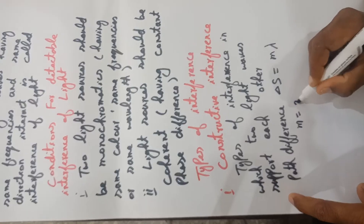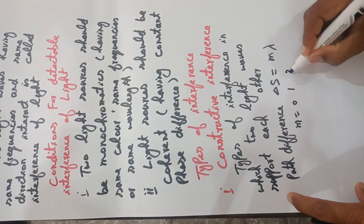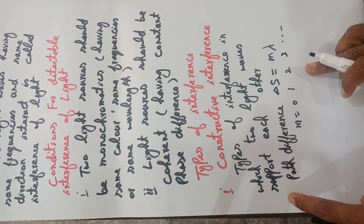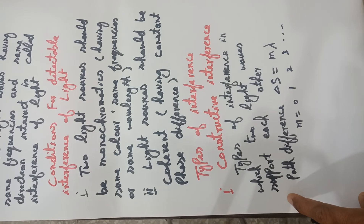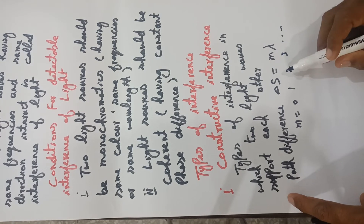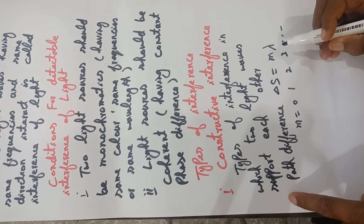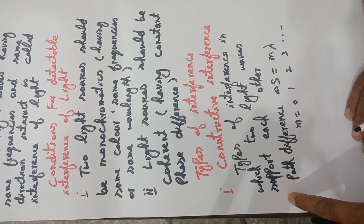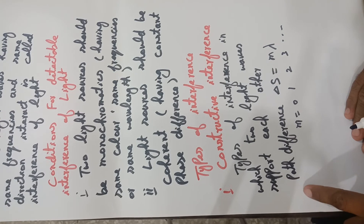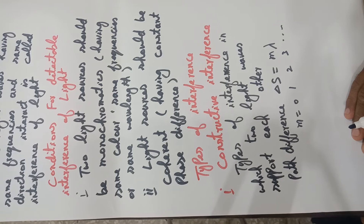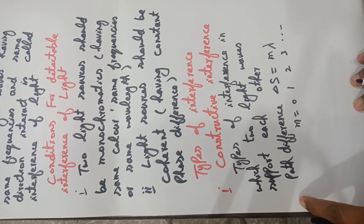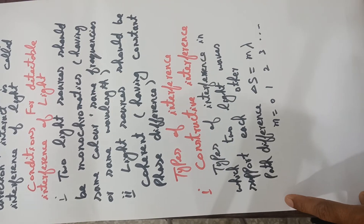Here m is an integer whose value is 0, 1, 2, 3, and so on. This means when two waves have a path difference equal to an integral multiple of lambda, they produce constructive interference and we get maximum brightness.